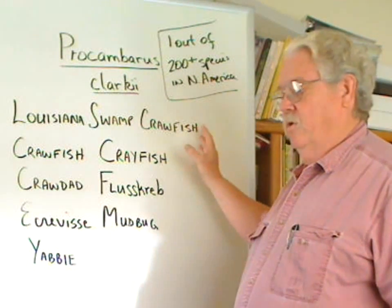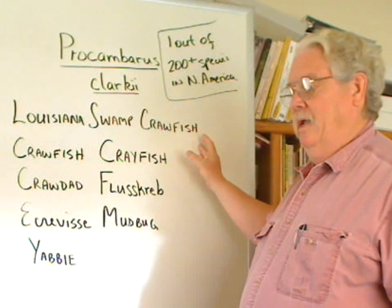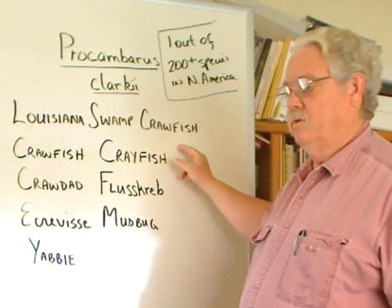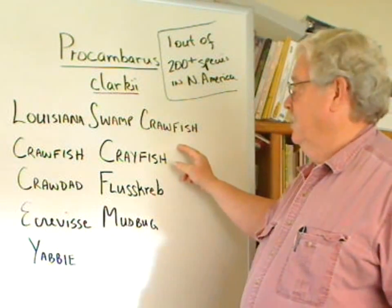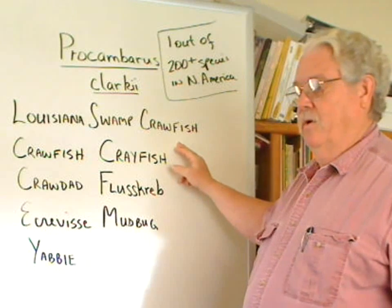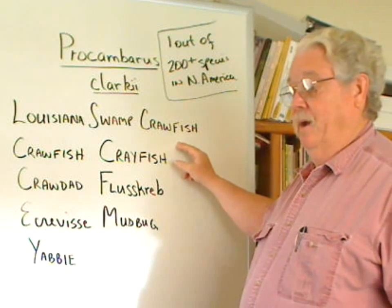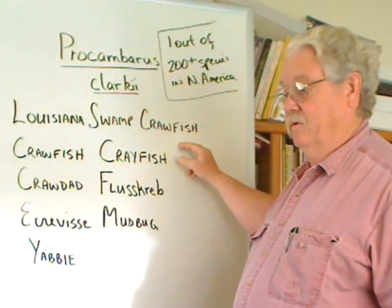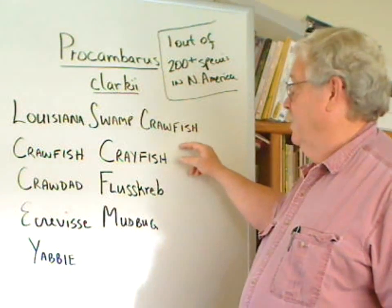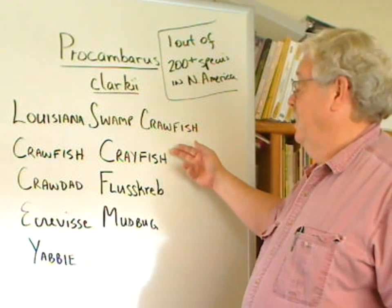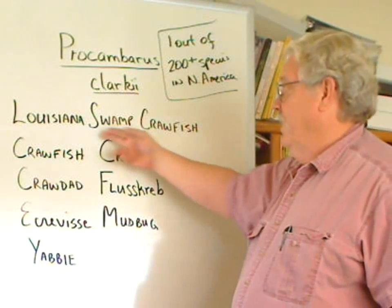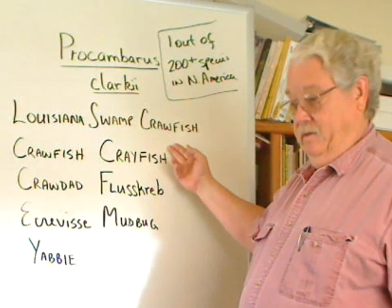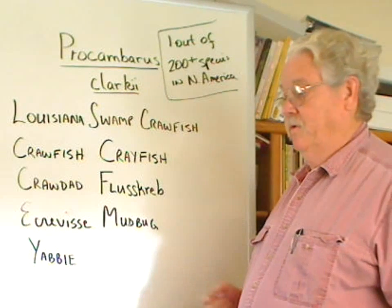Its general common name is the Louisiana swamp crawfish. This is the crawfish that's shipped by millions all across the country out of Louisiana that people eat. If you've had crawfish in a restaurant, this is probably what you've had.